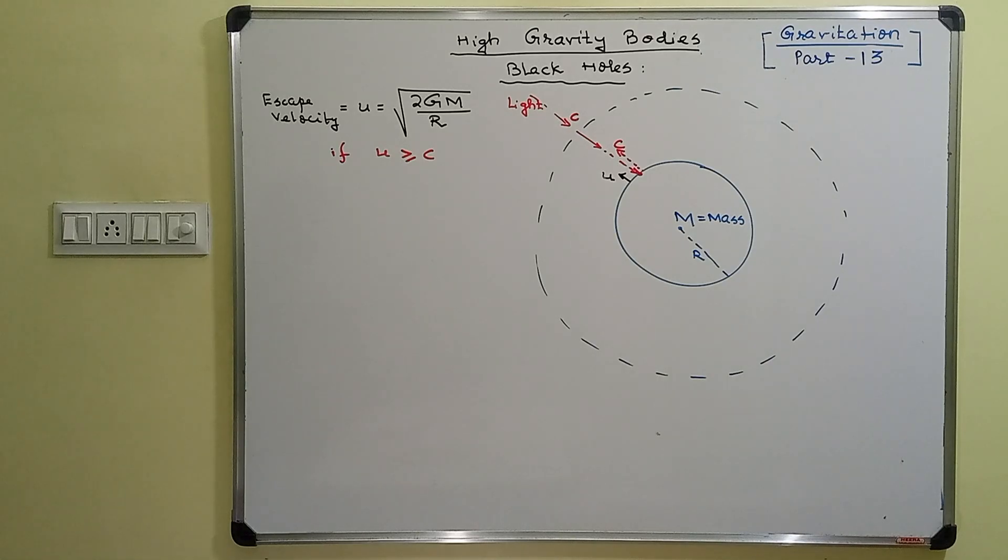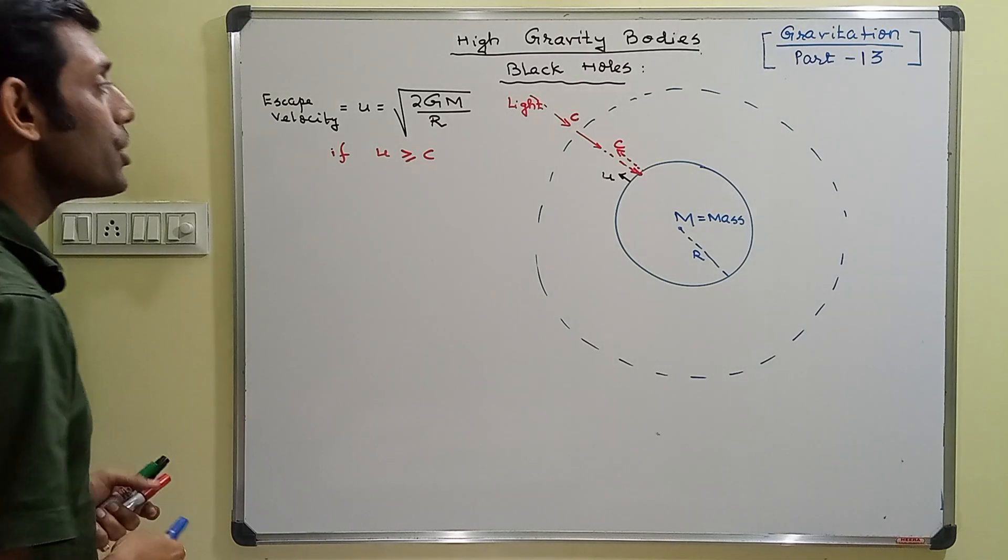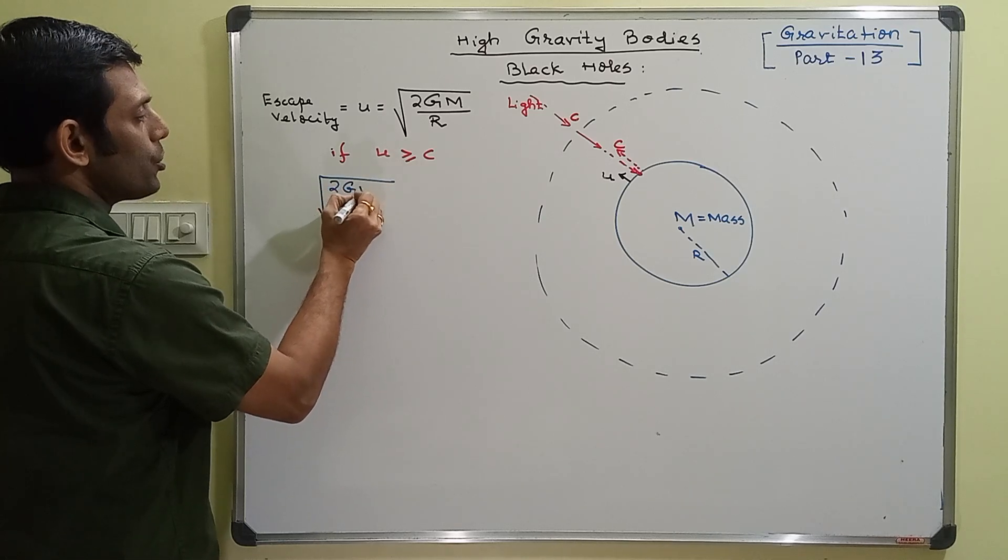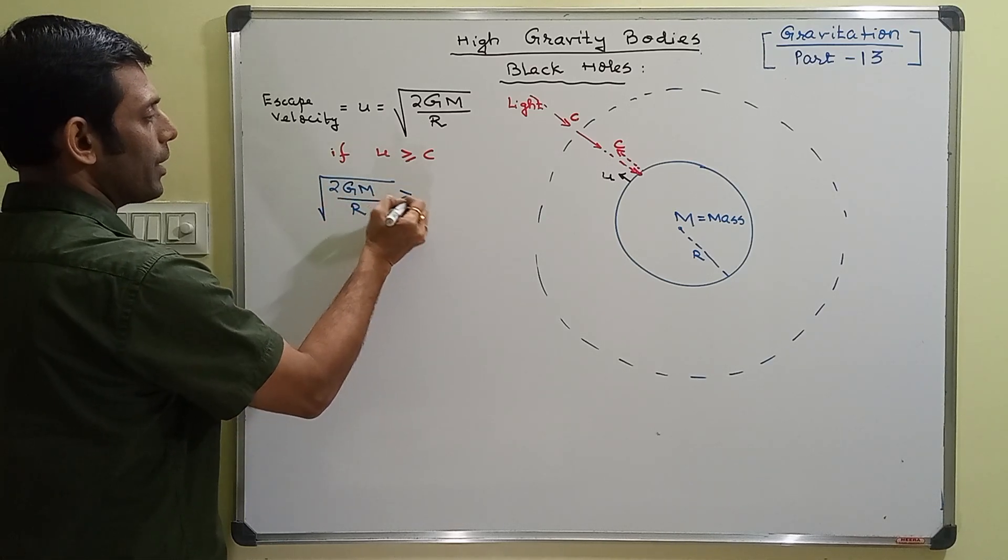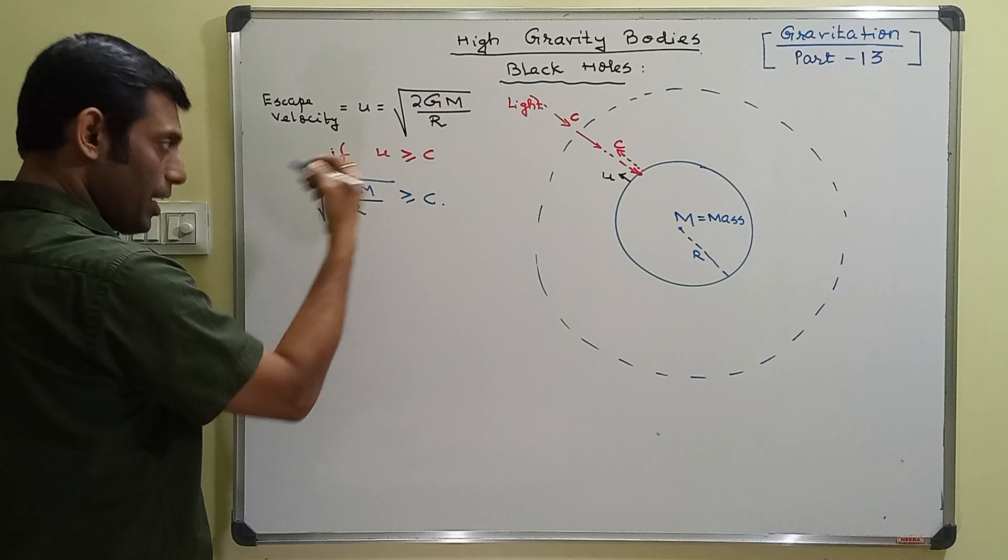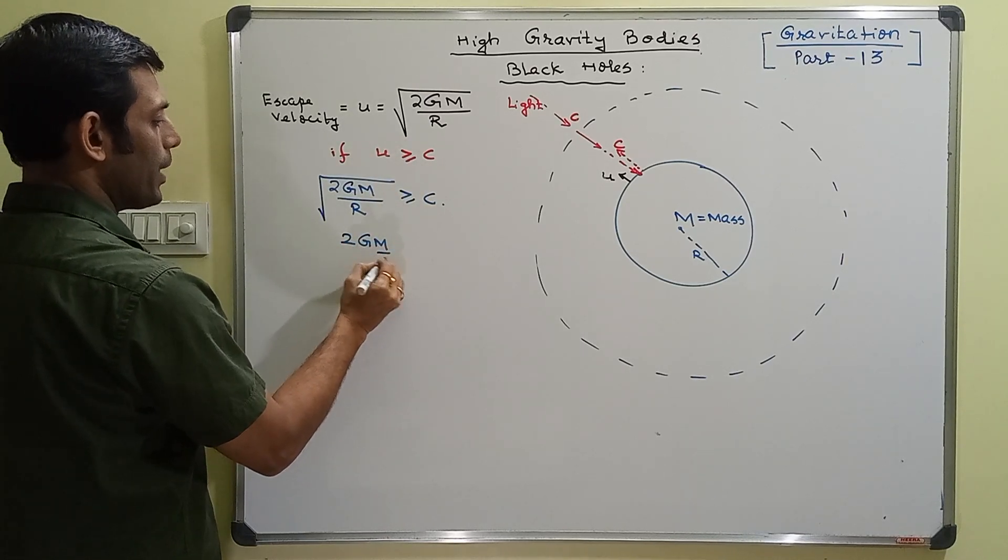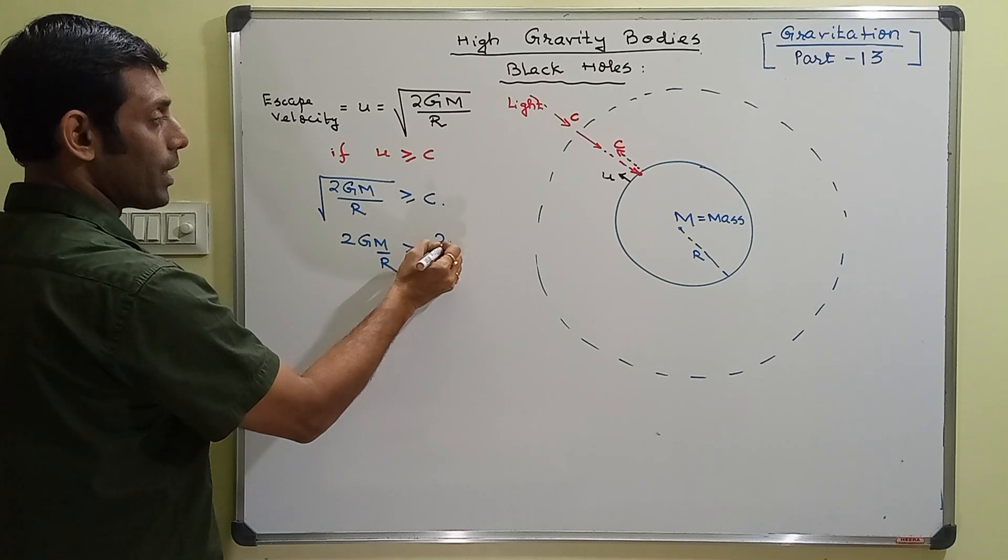If the escape velocity would be greater than the value of the speed of light, then some strange calculations come up. If this is 2GM by capital R greater than or equal to c square.